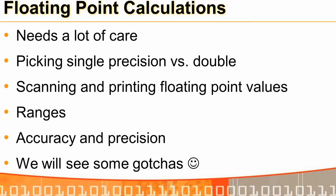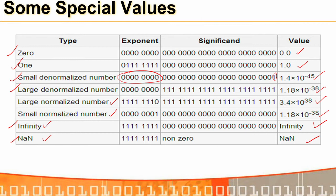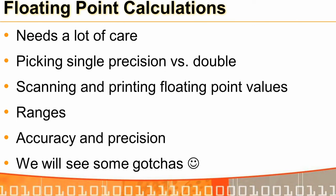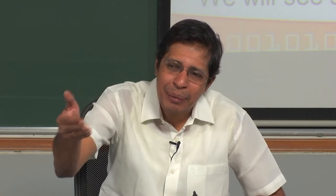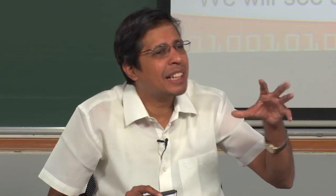When doing floating point computation we need to be careful about accuracy, precision, and range. An important decision is whether to use single or double precision. Also, when we scan and print floating point values, what is in memory will not necessarily come out unchanged — printf and scanf do some rounding and juggling.